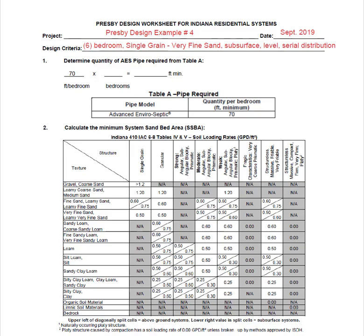The second design example we're going to work through is design example four in the Indiana design and installation manual. It is a six-bedroom home with single-grain very fine sand. It is a level subsurface system and we are using a serial configuration. Let's get started. Step number one is to determine how much Presby pipe is required. We will enter our number of bedrooms — six — and multiply by 70 feet. This brings us to a total of 420 feet of pipe.